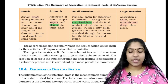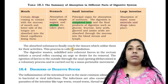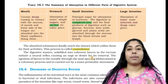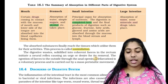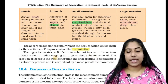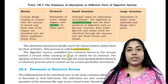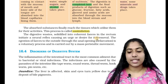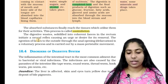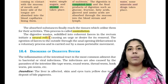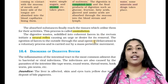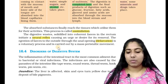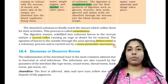The absorbed substances finally reach the tissues which utilize them for their activities — this process is called assimilation. Undigested and unabsorbed substances move to the rectum. The digestive waste is solidified into coherent feces in the rectum, and a neural reflex creates the urge for defecation. This is a voluntary process carried out by mass peristaltic movement.